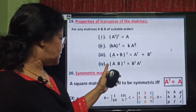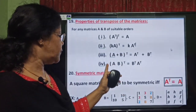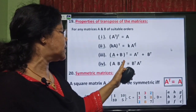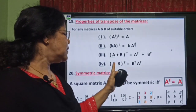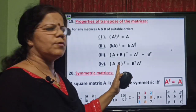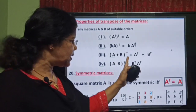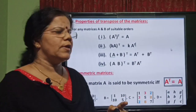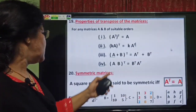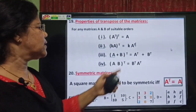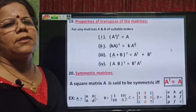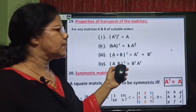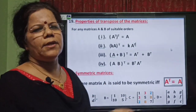The fourth property is very important: A·B whole transpose. It is not A-transpose into B-transpose; it is B-transpose into A-transpose. Using these properties, we can solve many problems and verify results as well.